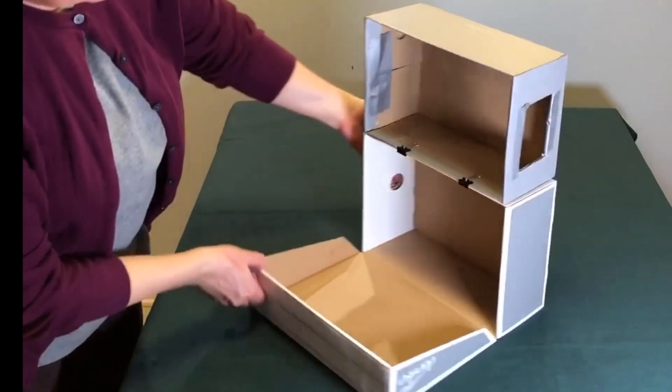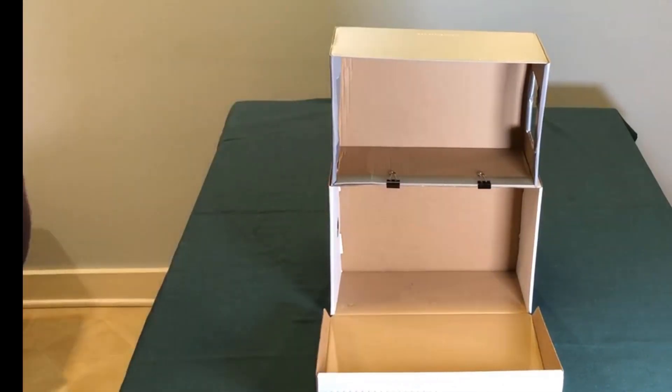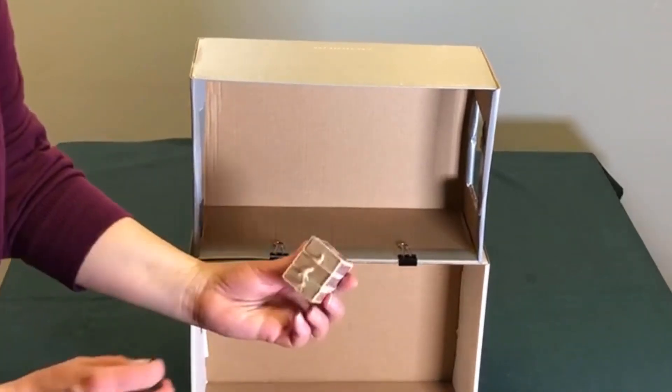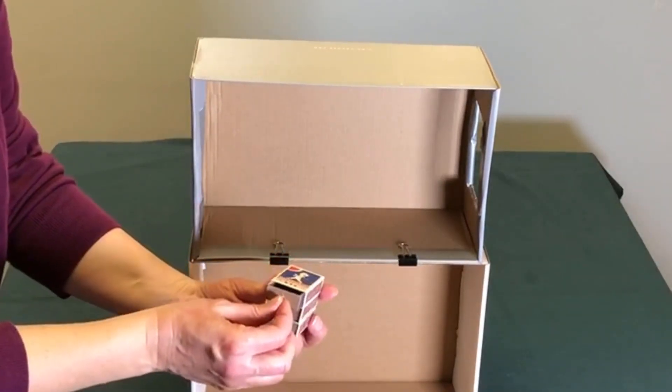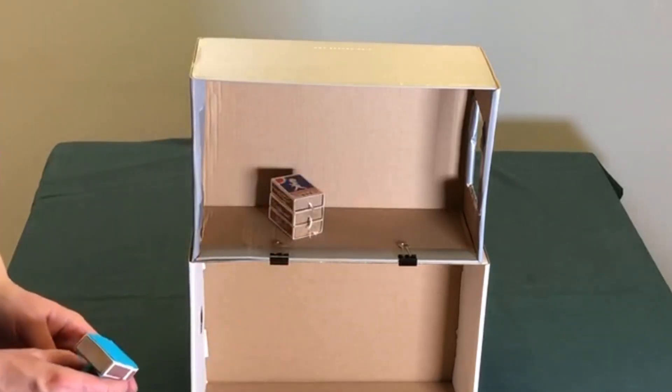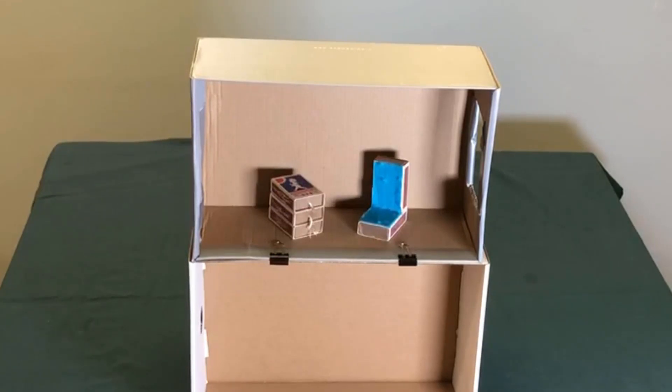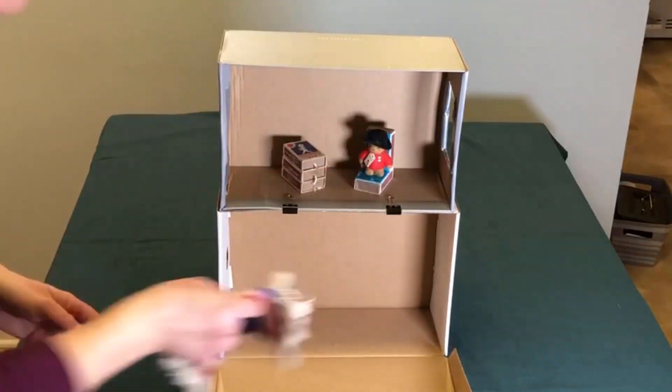And earlier I had cut a little window on the second floor that you see here. And now I can put some things inside the house. I have some furniture. These are some little pieces of furniture I made out of matchboxes a long time ago, maybe forty-five years ago when I was a kid. And they meant a lot to me so I kept them.